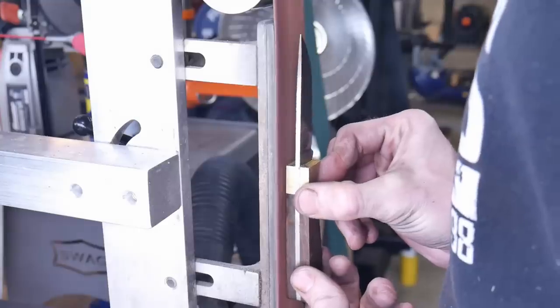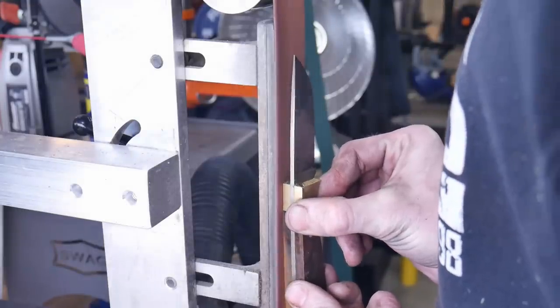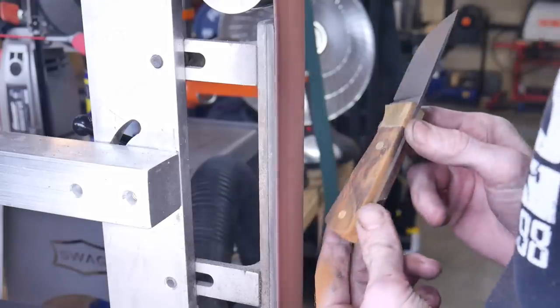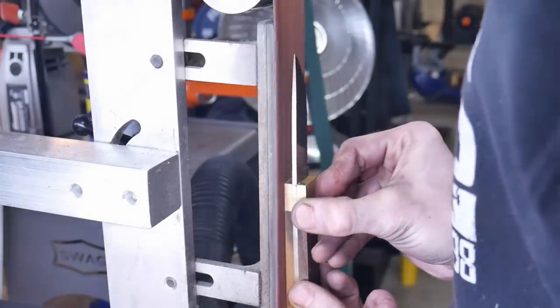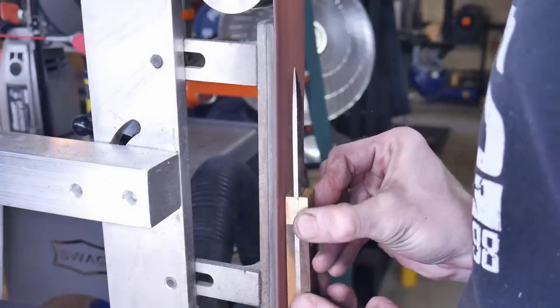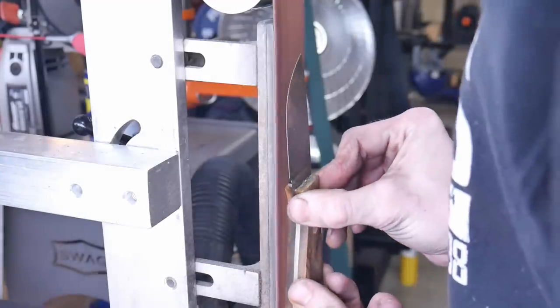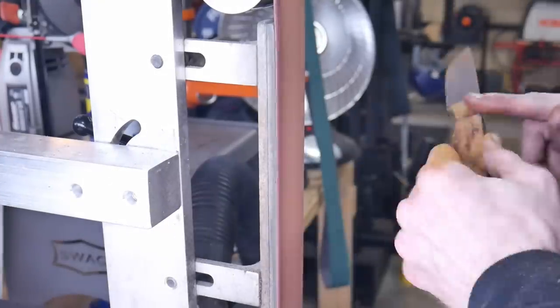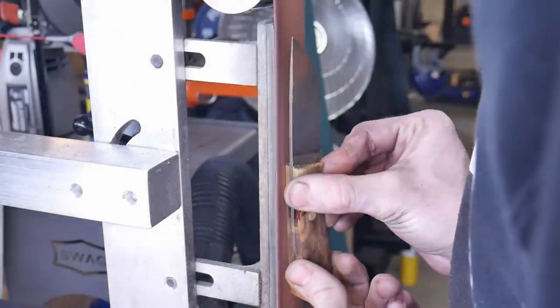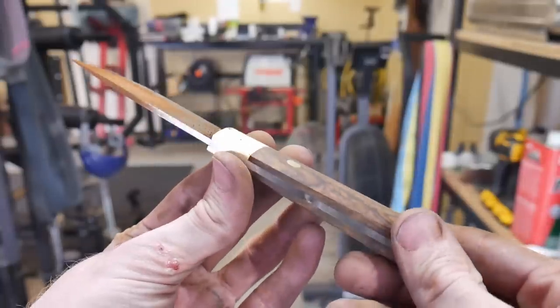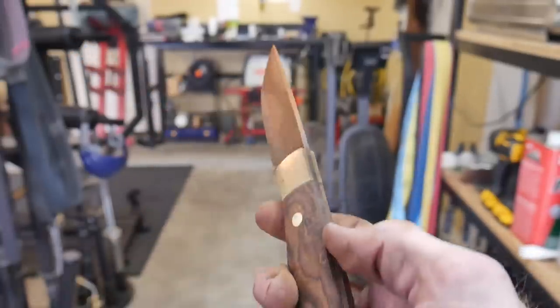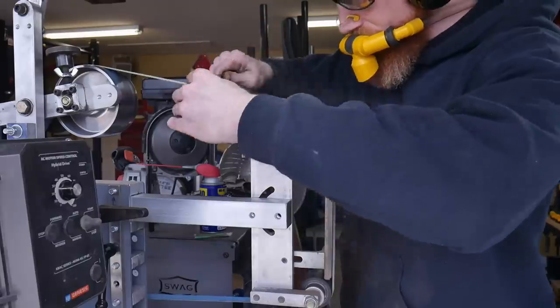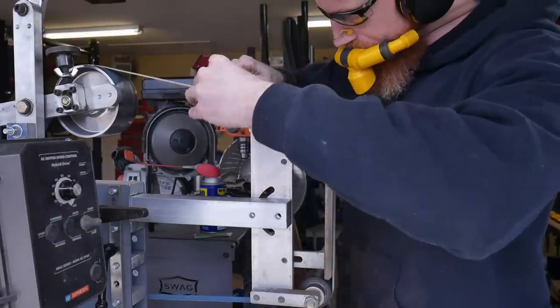Then I took down the profile of the handle to the tang, and after I got everything nice and squared up, I started radiusing the handle like this. I did that to both sides so that I have a nice radius on both sides of the handle. Next step is to knock down these edges with a one inch scalloped belt, J-flex belt.